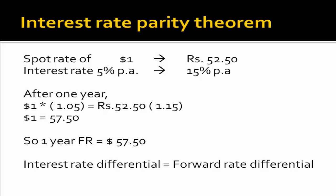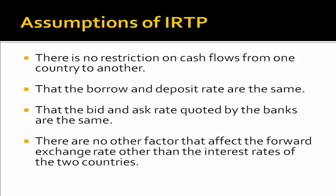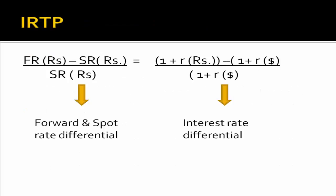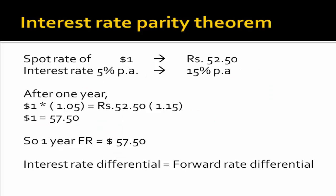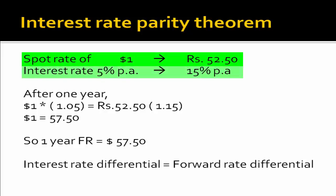There are certain assumptions in IRTP: there is no restriction on cash flows from one country to another; borrowing and deposit rates are the same; bid and ask rates quoted by the bank are the same; and there are no other factors affecting the forward exchange rate apart from the interest rate. Let's discuss an example: the spot rate of dollar 1 equals rupees 52.50, the interest rate in the USA is 5% per annum, and in India is 15% per annum. What will happen after one year?